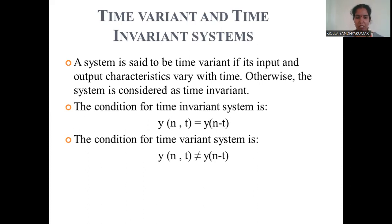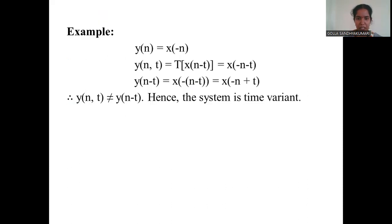A system is said to be time-variant if the input and output characteristics vary with respect to time. A time-invariant system is the opposite. The condition for time-invariance is Y(n, t) = Y(n − t), where Y(n, t) represents the output delayed due to the input by t seconds, and Y(n − t) represents the output delayed by t seconds. If these two are not equal, the system is time-variant.